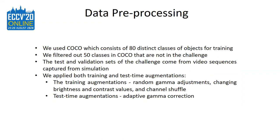First, I will introduce our data and preprocessing method. The test side of the challenge is a subset of the COCO dataset, which consists of 80 distinct classes of objects. For training, we used the COCO dataset and filtered out 50 classes in COCO that are not in the challenge. The test and validation set of the challenge came from video sequences captured from simulation. Since these images were captured in varying lighting conditions, including daytime and nighttime, we applied both training and test time augmentations.